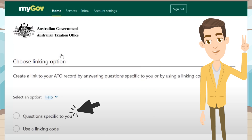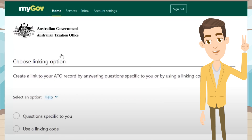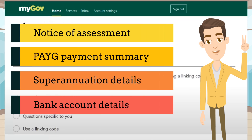Option 2: select questions specific to you. In this option, you will need to provide your personal information including your tax file number, given name, surname, and date of birth. You will also need to answer two questions. The questions include notice of assessments from the last five years, pay-as-you-go payment summary from the last two years, superannuation details from the last five years, and bank account details. Please note that if you are using your bank details, it must be the account that you received a refund from in last year's tax return, or you have earned interest in your bank account in the last two years.